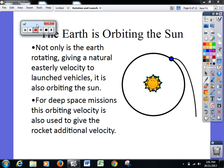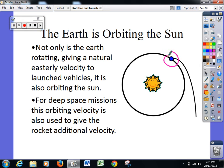Not only is the Earth rotating on its axis in an easterly direction, it is also orbiting the Sun.